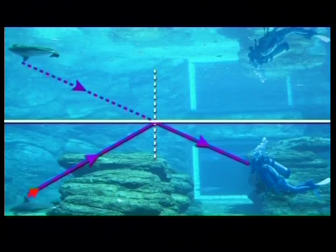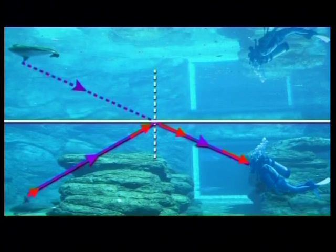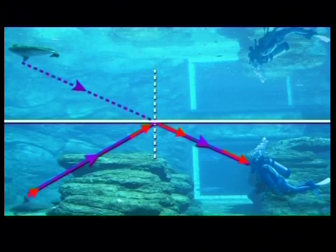Do you think that you can now explain, using what you have just learned, why a diver can see a shark around a rock? It's because of total internal reflection. Light from the shark hits the boundary between the water and the air above. But the angle of incidence is greater than the critical angle, which means the light will be reflected. If the diver looks up at the right moment, the reflected light will enter his eyes and so he will see the shark. If the diver and shark aren't in exactly the right position, the diver wouldn't be able to see the shark.